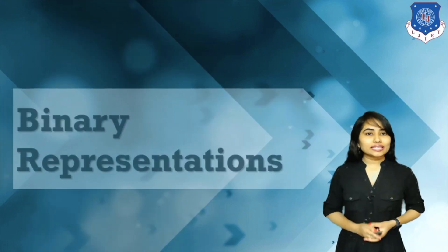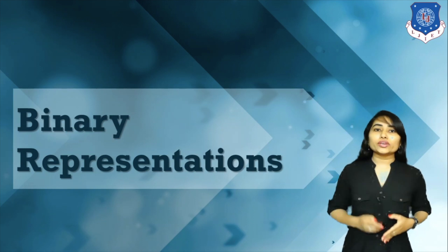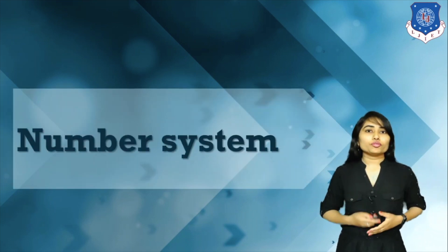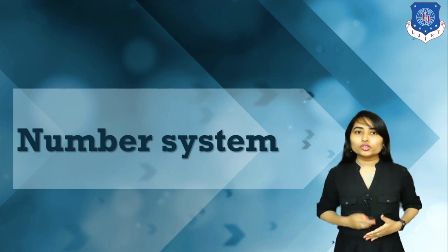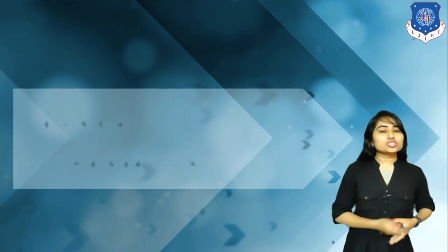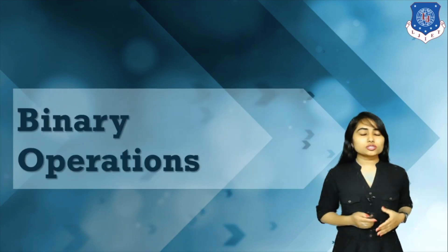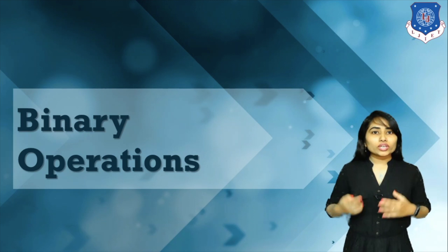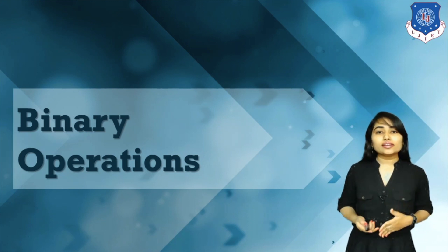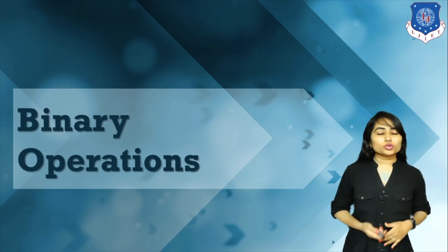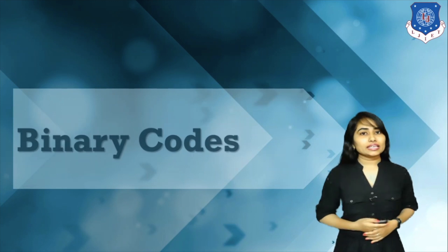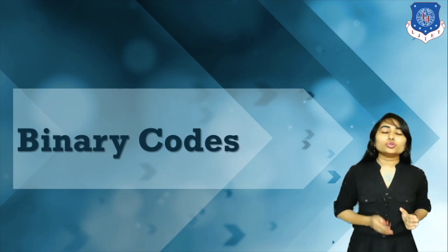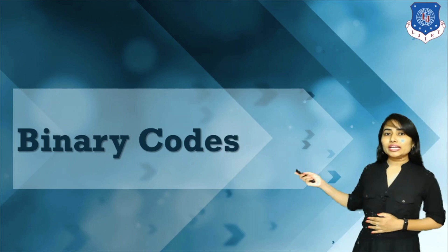For that, we have to study binary representation — how we represent binary numbers. Then we have to study about number systems, because if we want to learn about binary we need to understand number systems. Then we have to study binary operations, because our processor or CPU processes data in binary form. We also study binary codes, as binary information is represented in different forms.